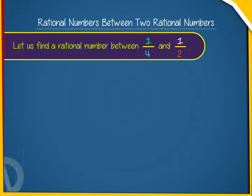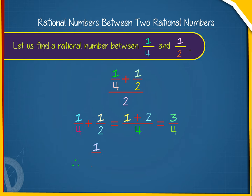Let us find a rational number between one by four and one by two. We find one by four plus one by two upon two. Now, one by four plus one by two equals to one plus two by four, equals to three by four. Therefore, one by four plus one by two divided by two equals to three by four divided by two, equals to three by eight.